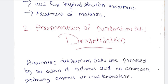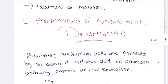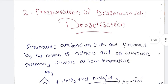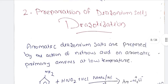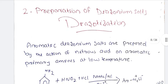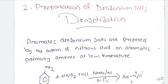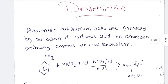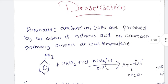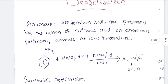Diazotization means the preparation of diazonium chloride. Diazonium chloride is prepared by the treatment of aniline with nitrous acid (HNO2, not HNO3). In the presence of NaNO2 and HCl at low temperature of 0–5°C, we obtain diazonium chloride.